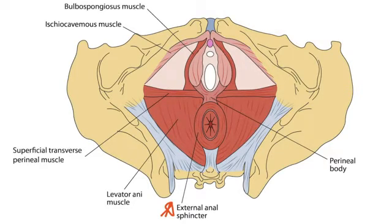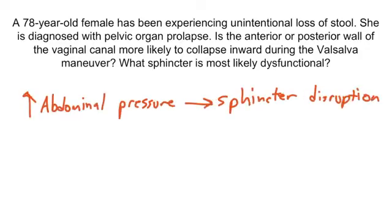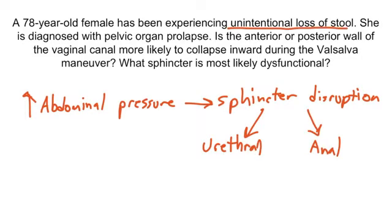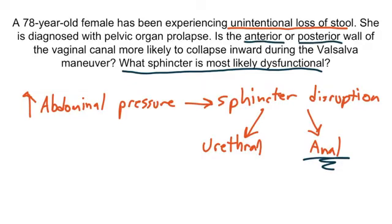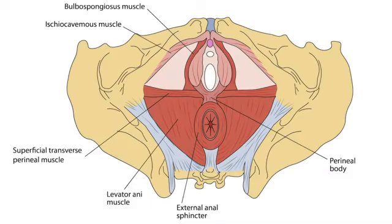Practice question: A 78-year-old female has been experiencing unintentional loss of stool and is diagnosed with pelvic organ prolapse. Is the anterior or posterior wall of the vaginal canal more likely to collapse inward during the Valsalva maneuver, and what sphincter is most likely dysfunctional? Since she has fecal incontinence, we know the anal sphincter is disrupted. The rectum is located posteriorly to the vaginal canal, so it's the posterior wall that's collapsing inward — this is rectocele — and the dysfunctional structure is the anal sphincter.